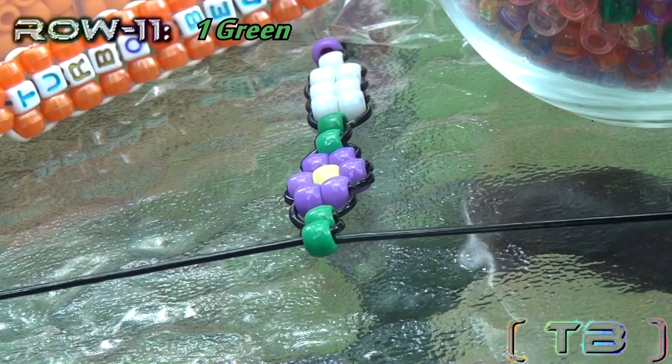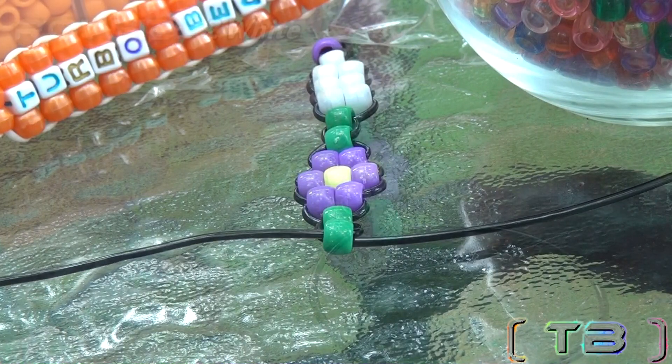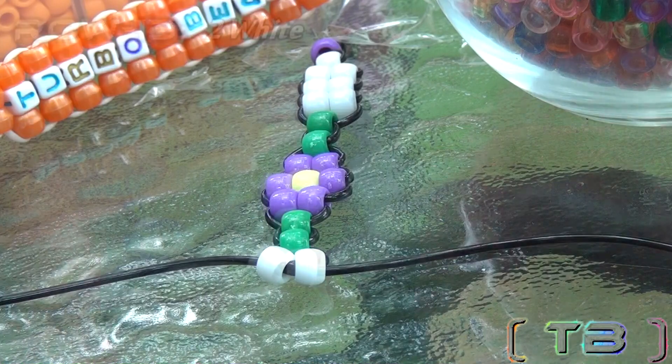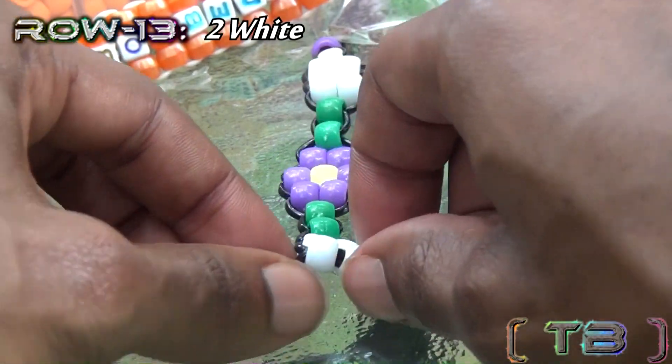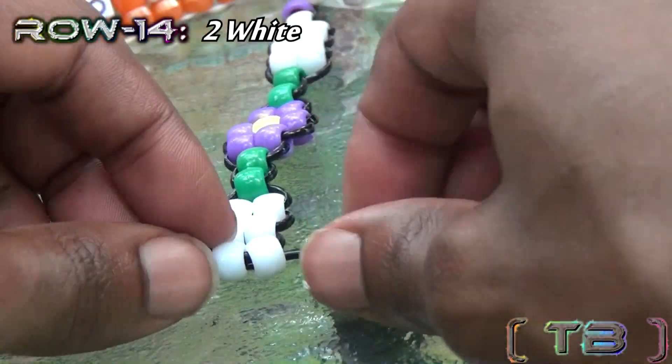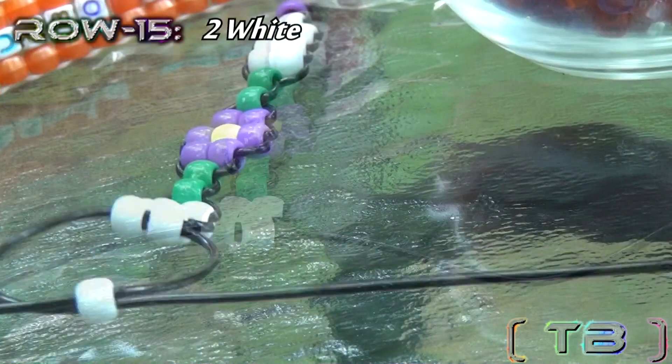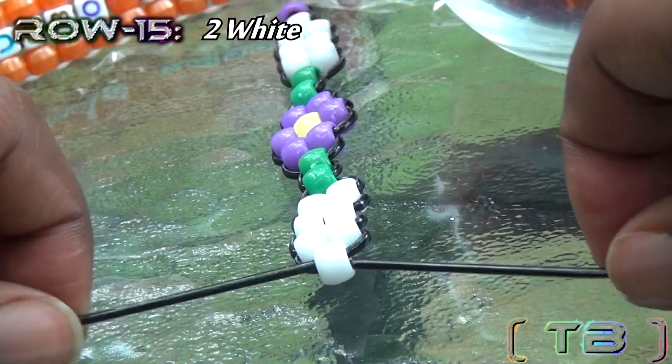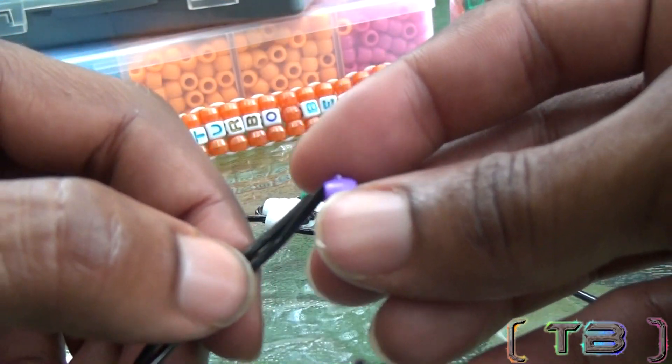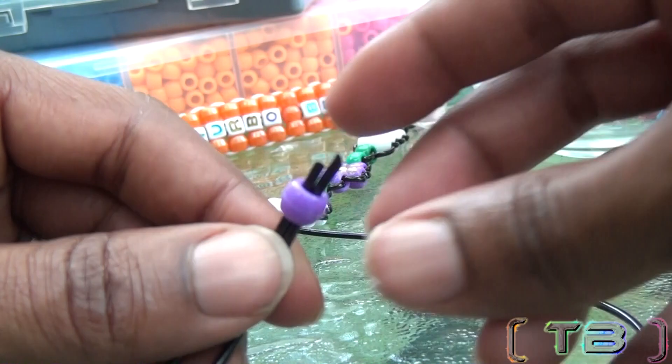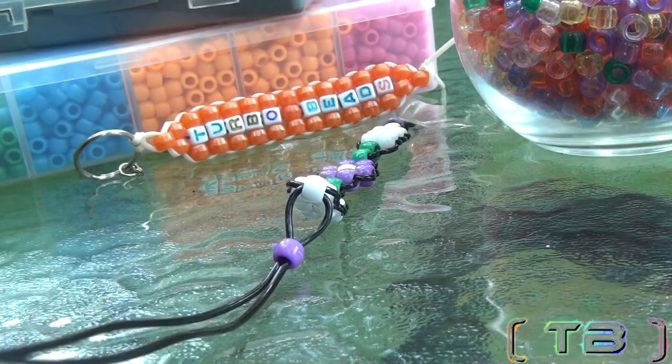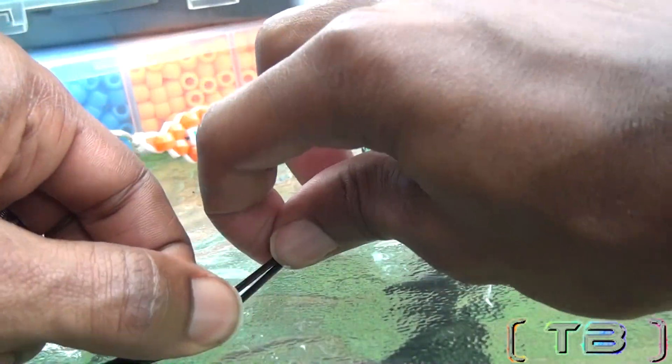Once you finish the 15th row, we're once again going to take both ends of the string and run a purple bead through both ends of the string going in the same direction. Be sure to push the bead all the way to the top.